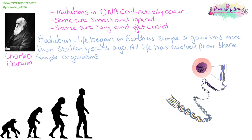Darwin's theory is that life — all life that we know these days — has evolved over the past three billion years, from the first life, the very, very simple unicellular organisms that were in that slushy puddle. And the way this evolution happens is by natural selection.